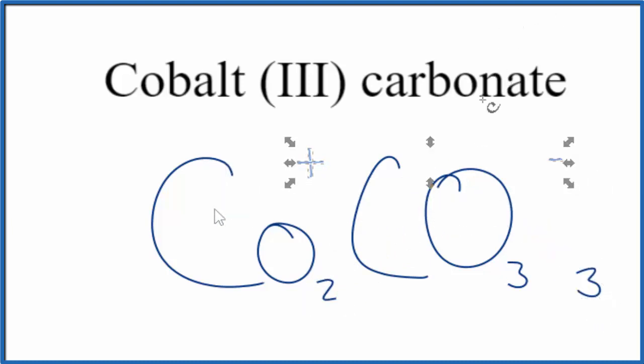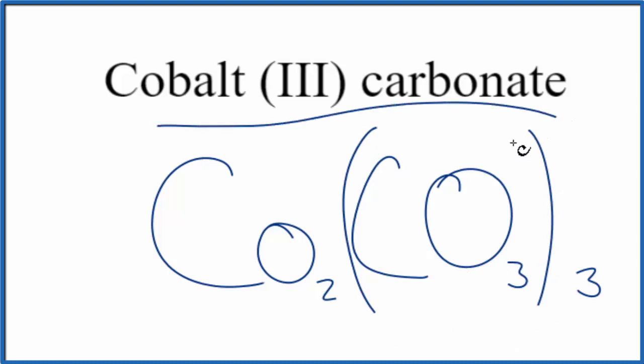Let's get rid of these symbols. And then because we have 3 cobalt ions, we need to put parentheses around the CO3. That makes this the formula for cobalt-3 carbonate.